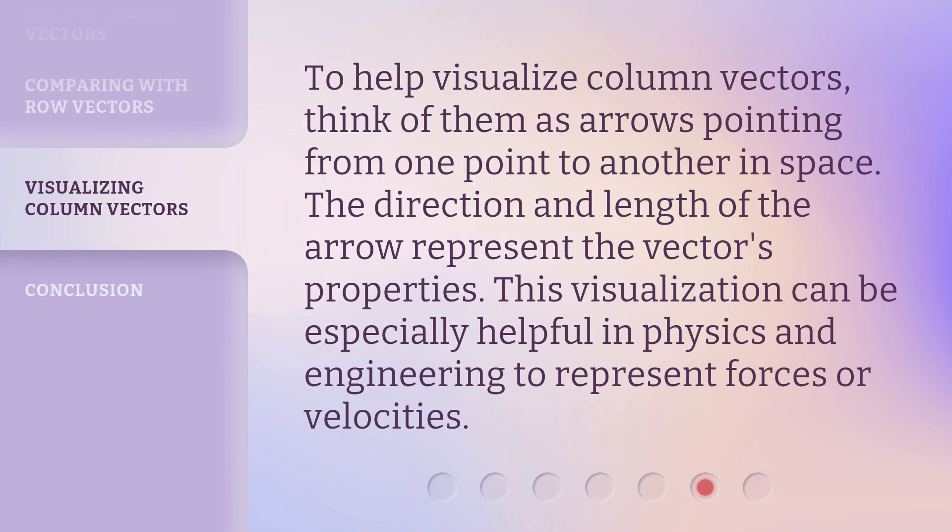To help visualize column vectors, think of them as arrows pointing from one point to another in space. The direction and length of the arrow represent the vector's properties. This visualization can be especially helpful in physics and engineering to represent forces or velocities.